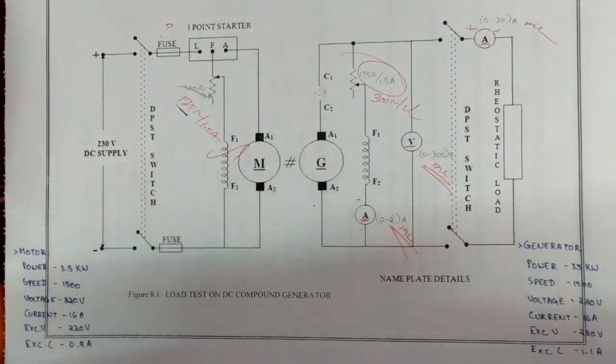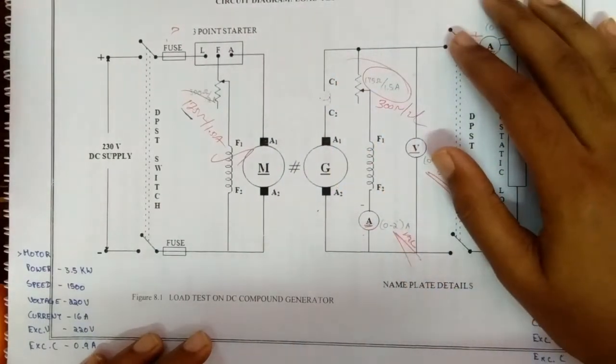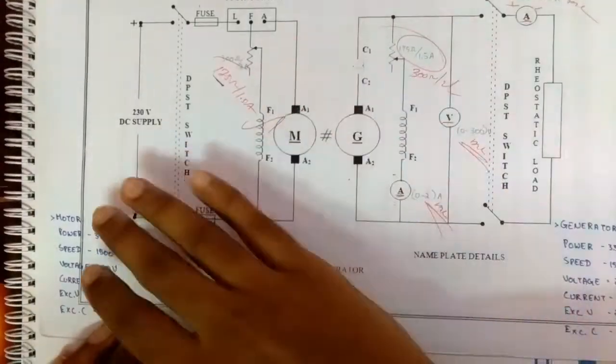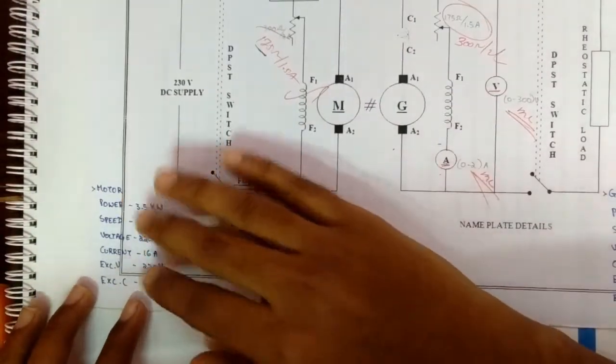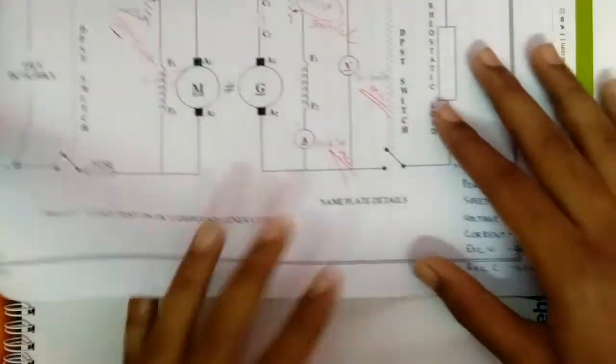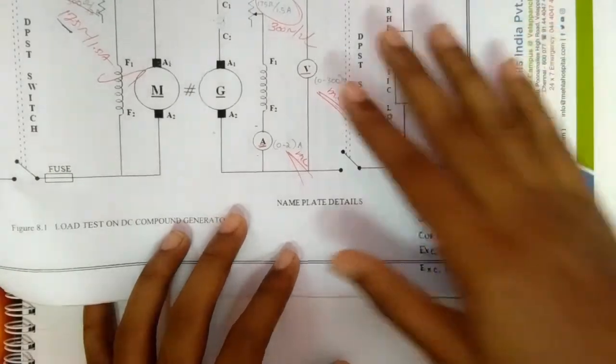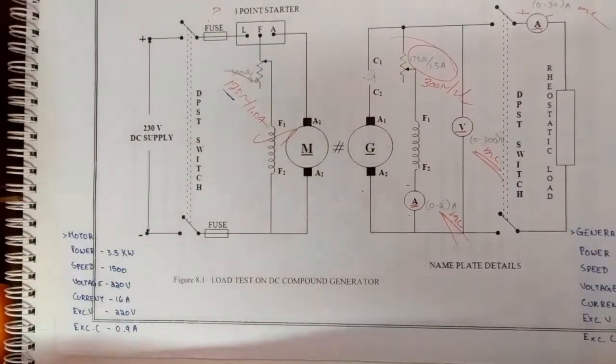Hi guys, in this experiment we're going to see about the load test on DC compound generator. So the circuit diagram is this one. The nameplate details for motor is shown here and for generator is shown here.